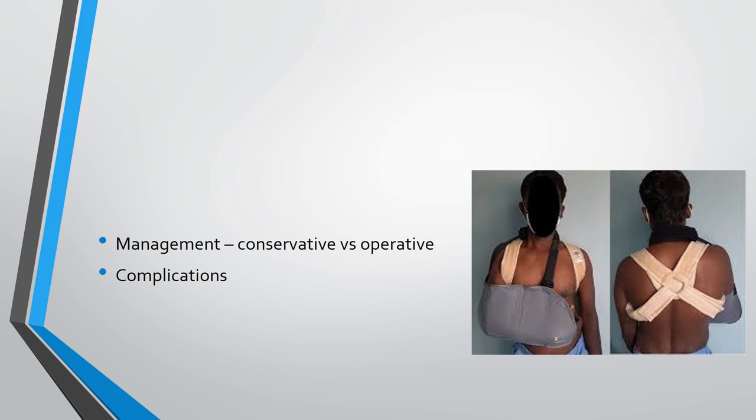There are some absolute indications for operative management: open fracture, skin tenting due to the clavicle fracture, or more than 2 cm of shortening. Complications include malunion, nonunion, and neurological injury.